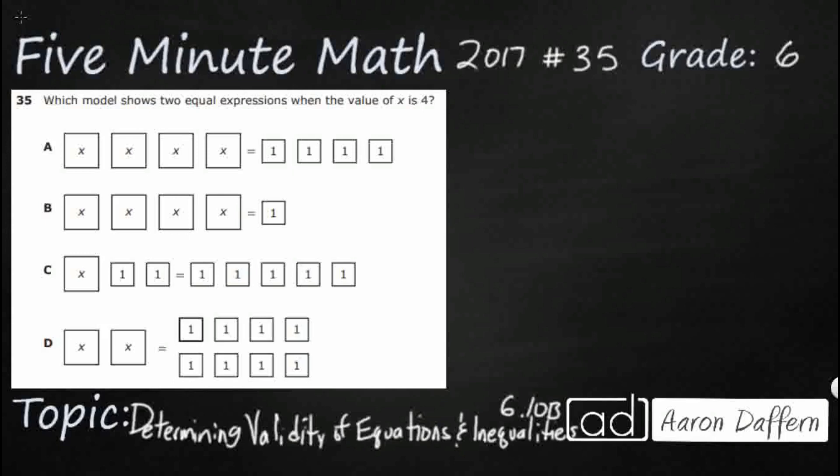So, we have some pictorial representations — some models of expressions — and we have x equals 4, and we need to find how we can get both sides of these equations to work. There are two different ways to solve this. One would be to just plug and play — let's just substitute.